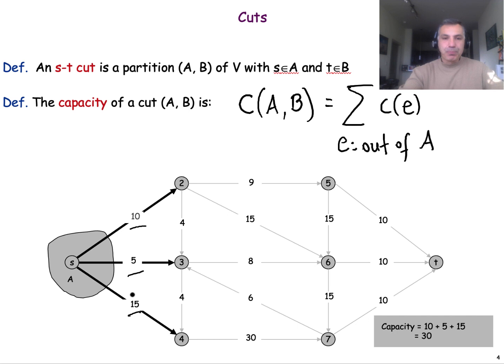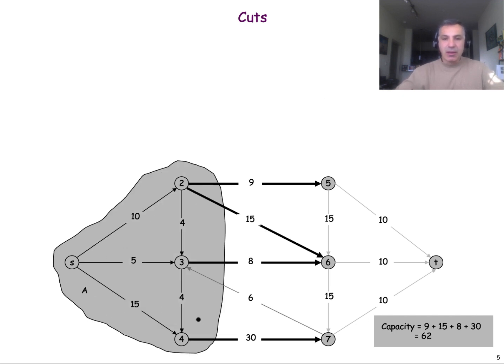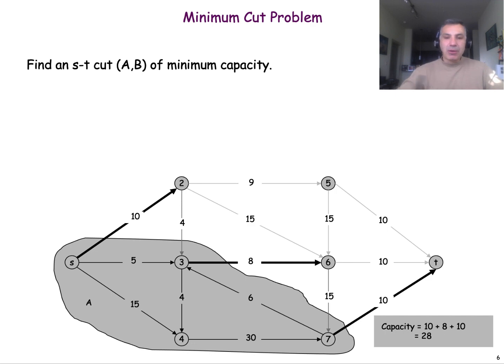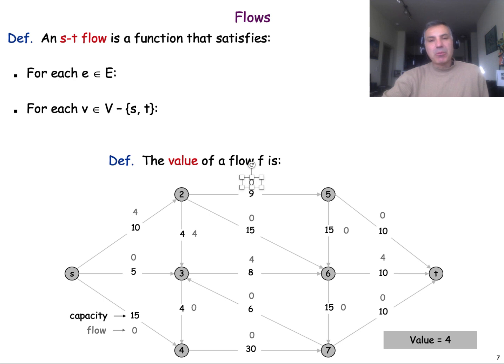But as you can see, I can have another cut, say this one, in which I have to add the capacities of these edges. Notice that I'm not adding the capacity of this edge because this is incoming to A. I'm only looking at edges that are outgoing from A. This cut here has a much larger capacity of 62. We can now talk about the minimum cut problem, which is what is the cut of the graph in sets A and B such that the capacity of the cut is minimum. So here we see that the minimum capacity is actually these three edges, which gives us 28.